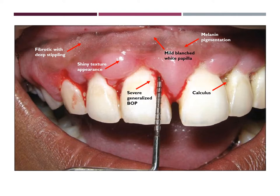In this other gingival image, you can clearly see the bleeding upon probing, which is severely generalized based on the periodontal assessment. Again, you can see more deep stippling and this shiny texture. In this particular image, you can also see more melanin pigmentation as well as calculus deposits.